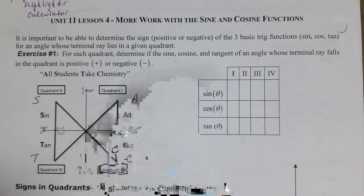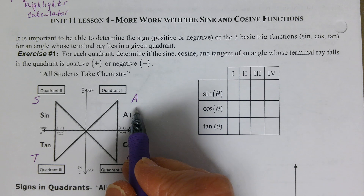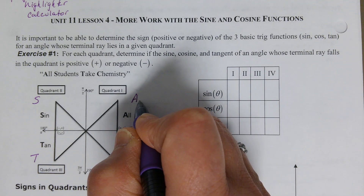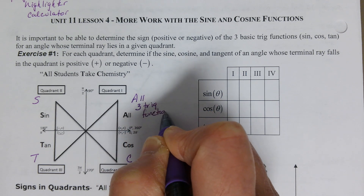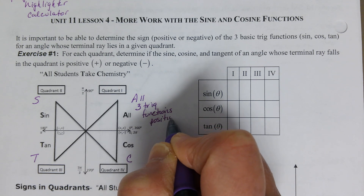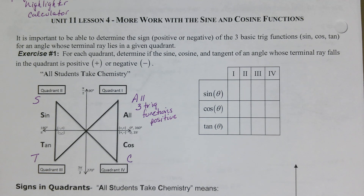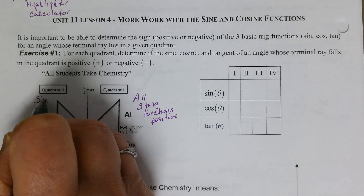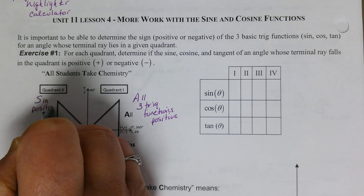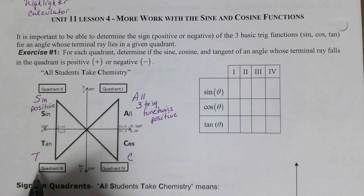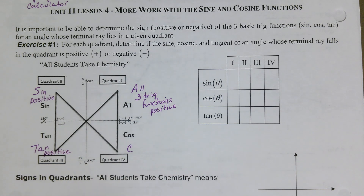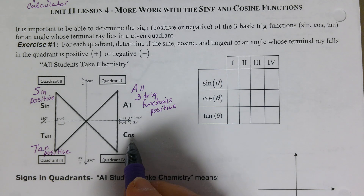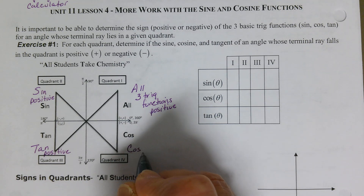This means that in quadrant one, all three trig functions are positive. In quadrant two, S is for sine — sine is the only trig function positive there. Tangent is positive in quadrant three. And in quadrant four, C for cosine is positive.